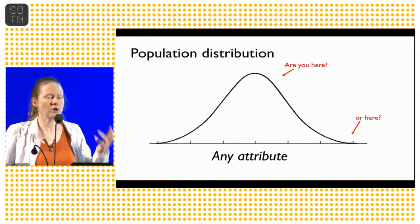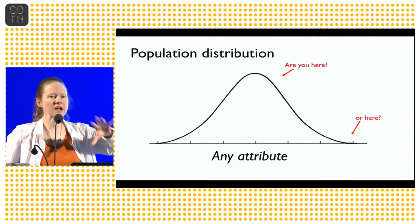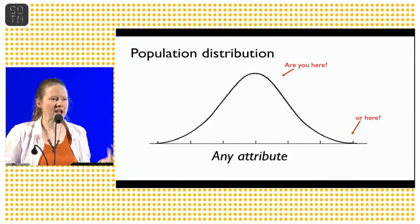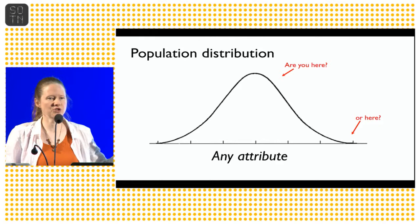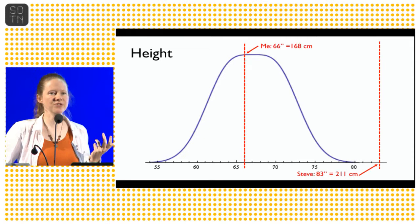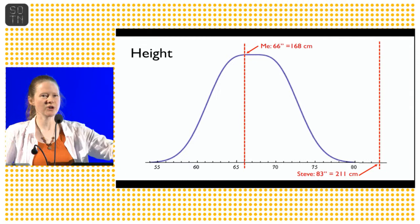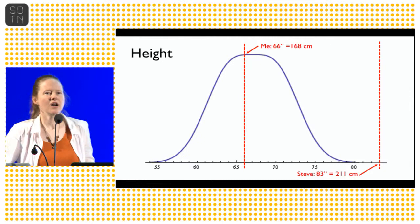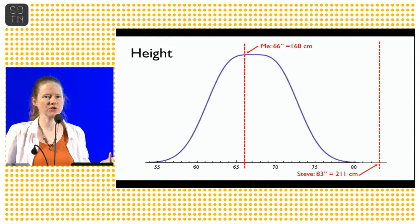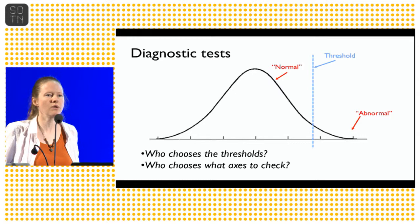One of the things that I realized is that if you look at any given attribute, there's a distribution in the population. It's not necessarily a bell curve, but things generally have a lot of people clustered in one area, and then you've got tails. You've got people who their reaction, their status on a given attribute is out of the norm. In the case of height, you can tell this. I'm pretty much average height for an American woman. My friend Steve is so far off the edge of the chart, I had to extend the x-axis to even show you where he would be.